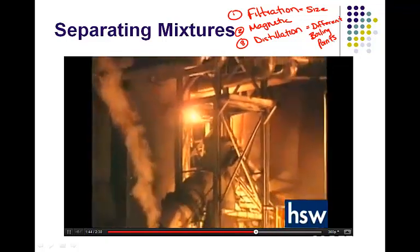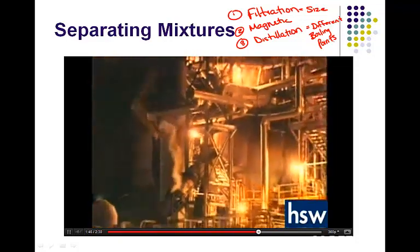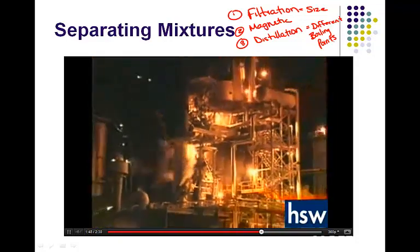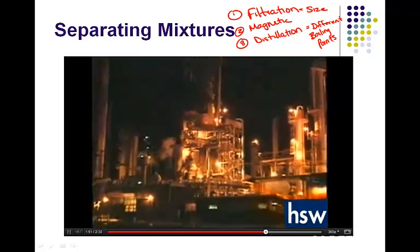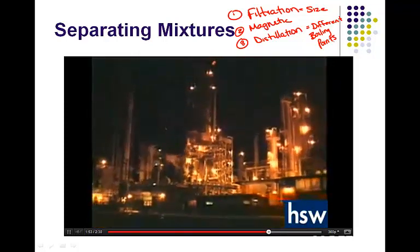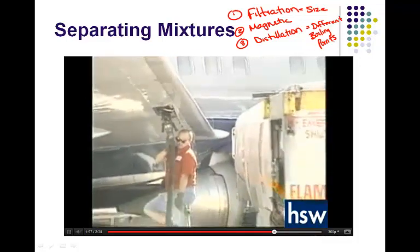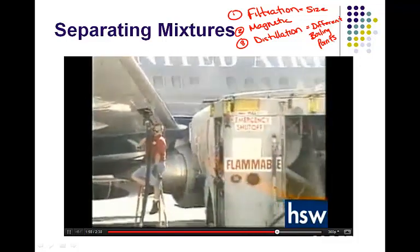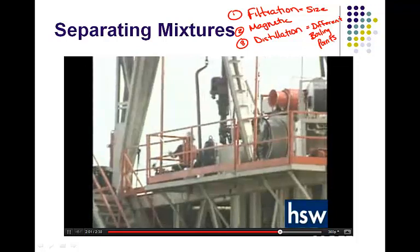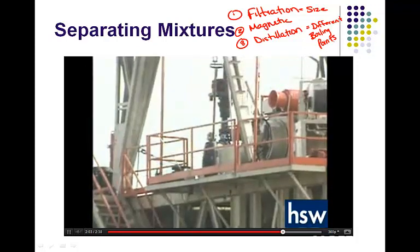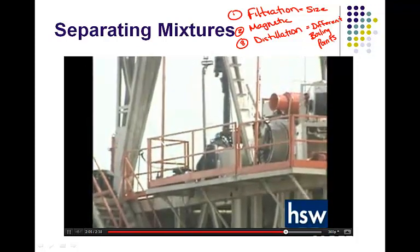Crude oil is also turned into a variety of fuels through the process of distillation. Different hydrocarbons in the crude oil have different boiling points. For example, jet fuel has a much lower boiling point than asphalt. The distillation process also removes any mineral or other impurities from the crude oil pumped from the earth.